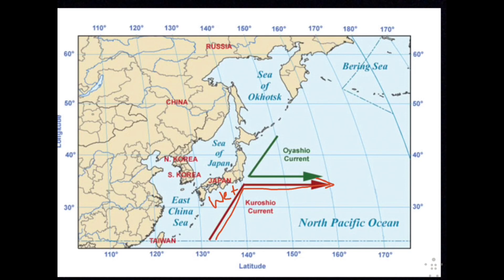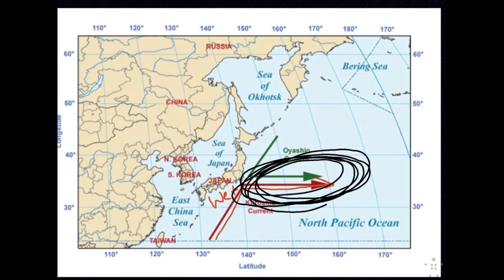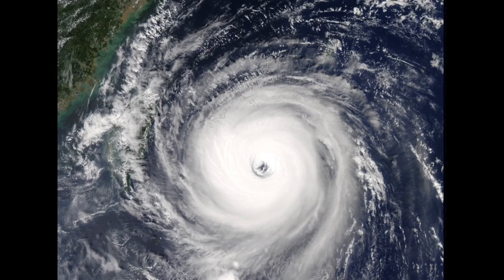The cold Oyashio current flows southwest from the Bering Sea along the Pacific coasts of Japan's northernmost islands, bringing harsh cold winters to Hokkaido's east coast. The interaction of ocean and wind currents also frequently gives rise to violent storms called typhoons. Typhoons are especially prevalent where wind and ocean currents mix, and they look very similar to hurricanes — essentially, they are hurricanes in the Pacific, called typhoons as they blow across coastal East Asia.